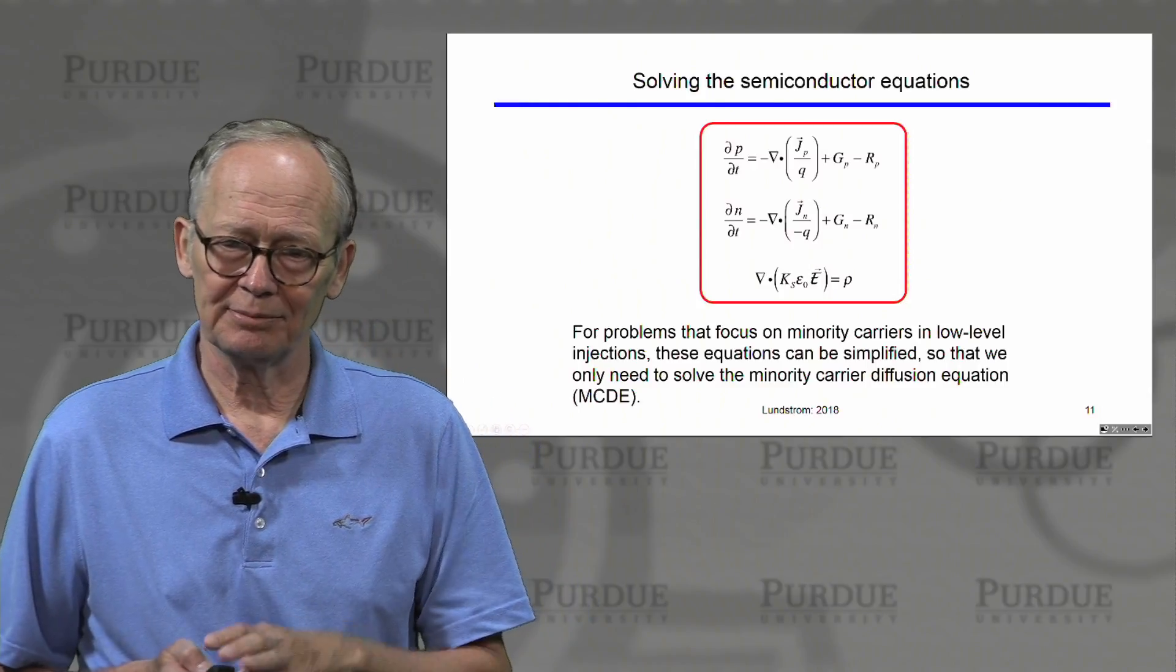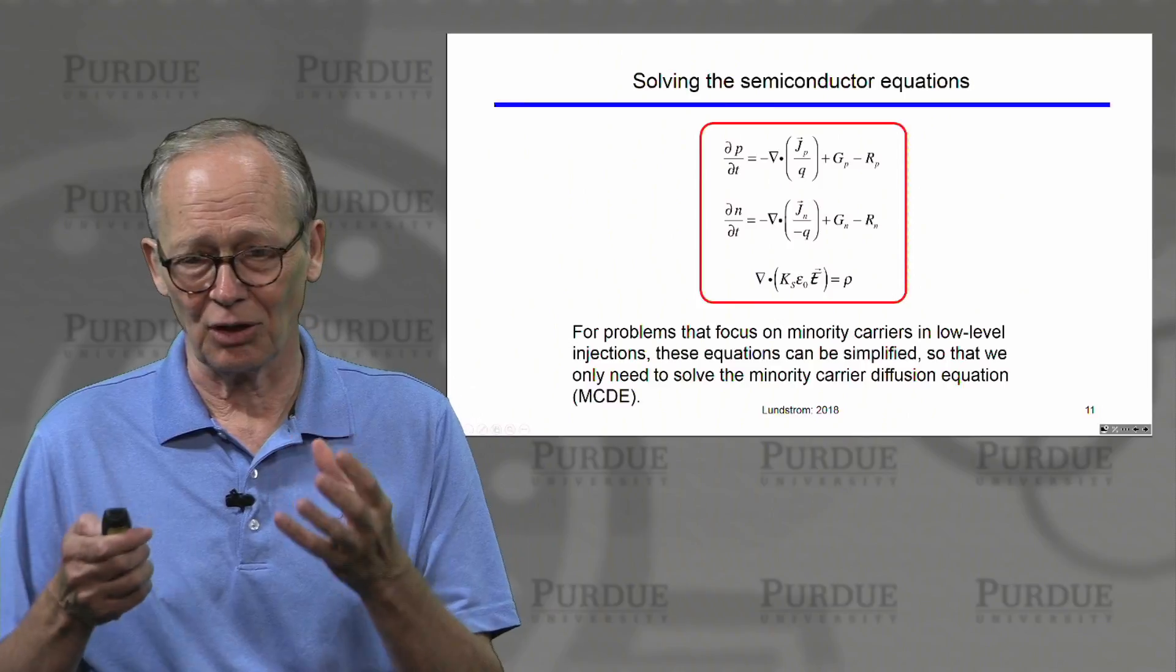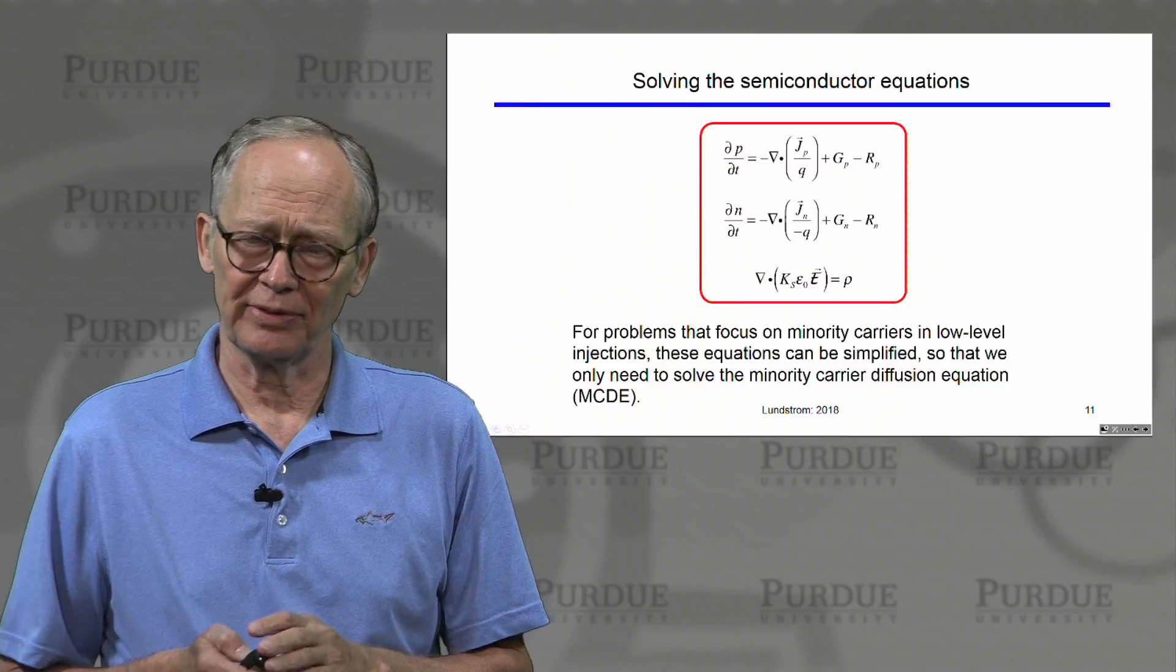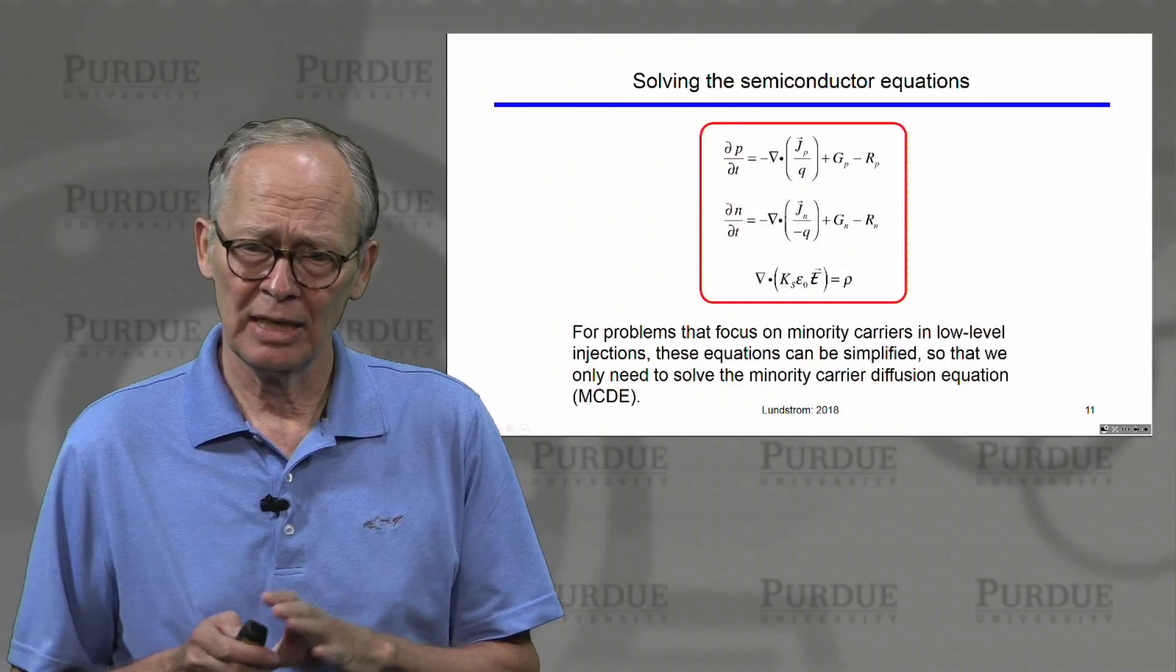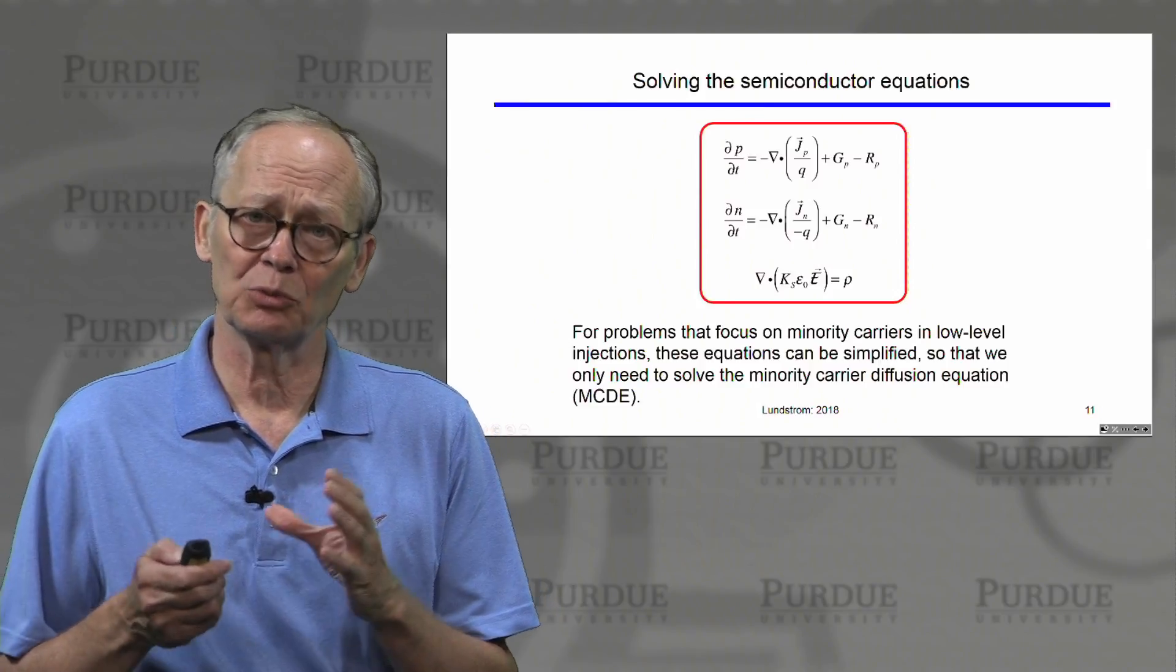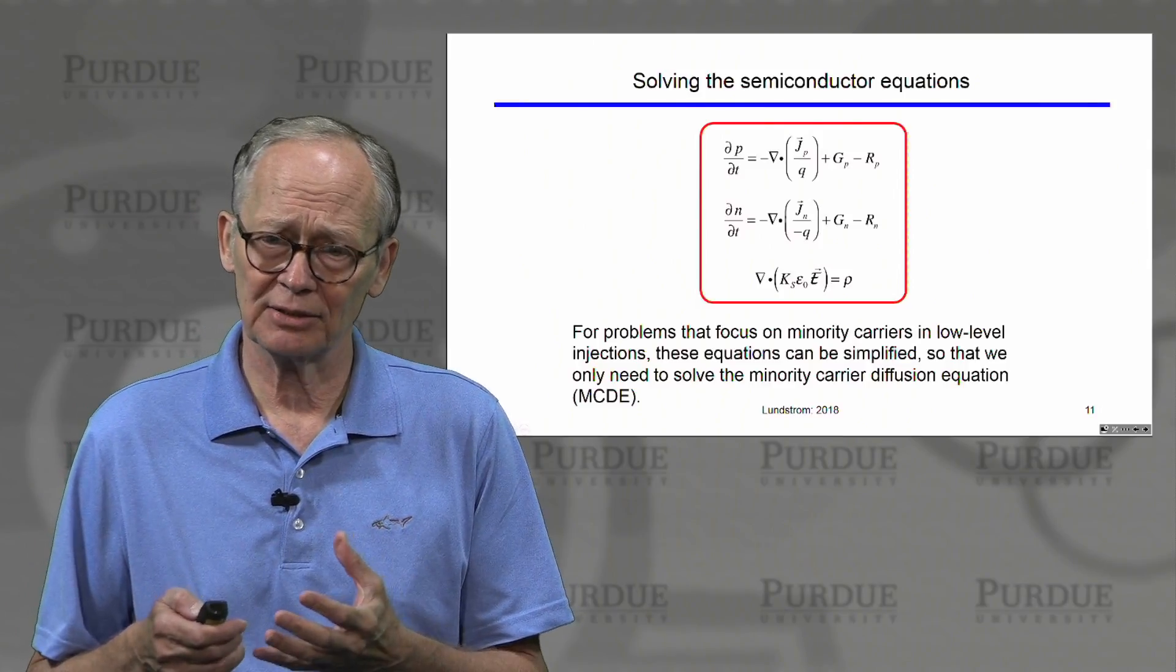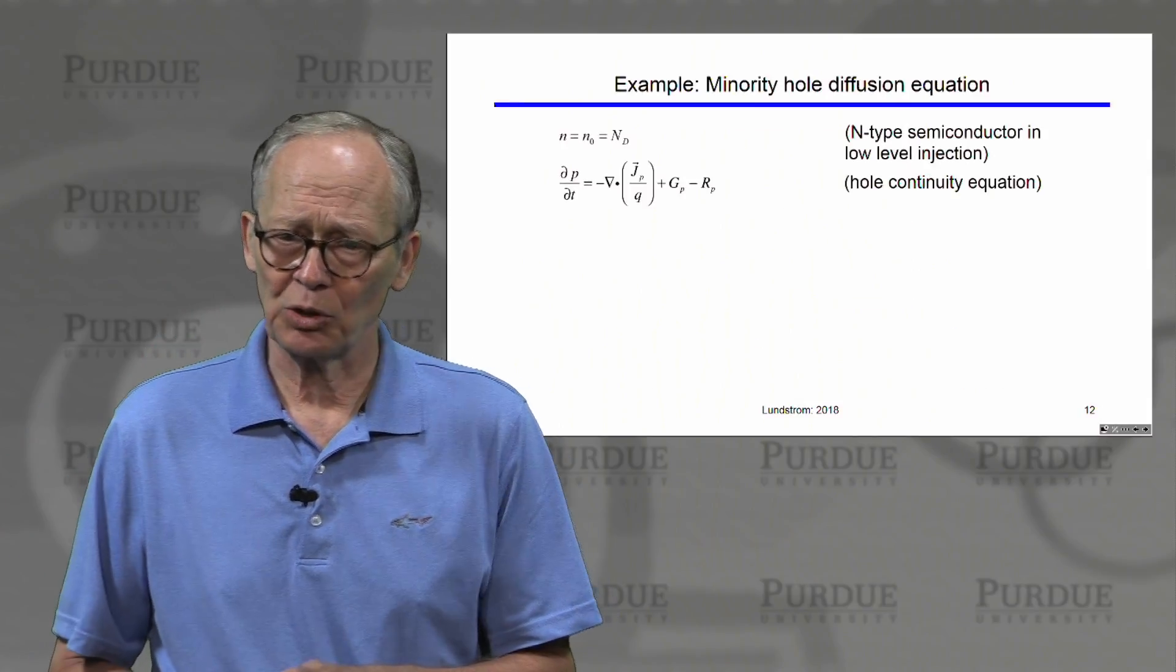We talked about going beyond qualitative solutions and actually solving these equations. To solve these equations, one way is to simplify them. For certain specific problems that are commonly encountered, we can simplify these equations to the point where they can be solved relatively easily. For problems that focus on minority carriers in low-level injection, these equations can be greatly simplified. We worked through an example.